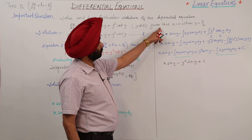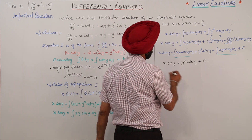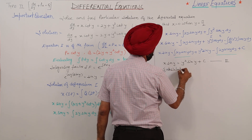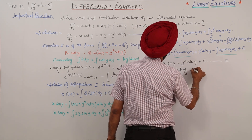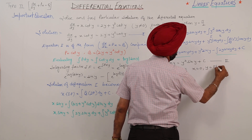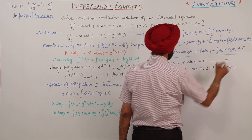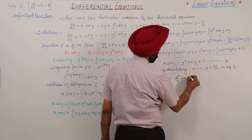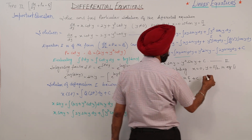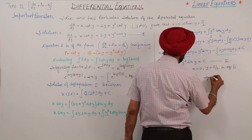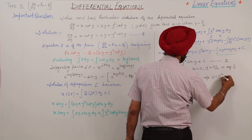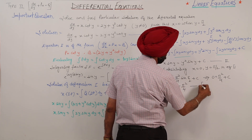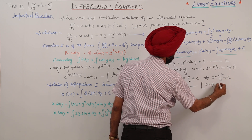Now we are given the initial condition: x equals 0 when y equals π/2. Substituting x equals 0 and y equals π/2 into equation 2: 0 equals π²/4 times sin(π/2) plus C. Since sin(π/2) equals 1, this gives C equals negative π²/4.